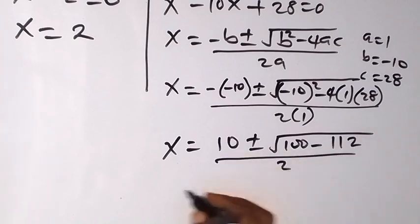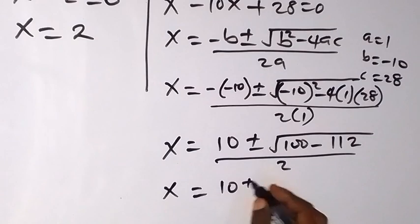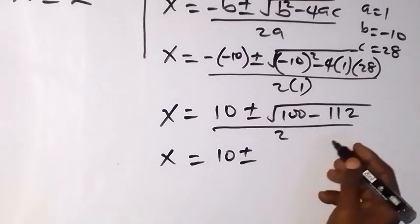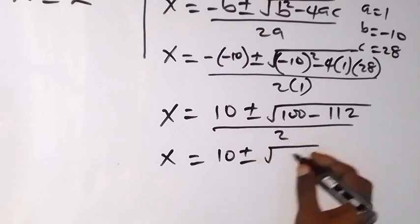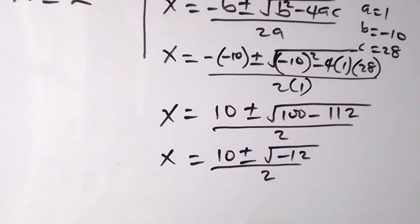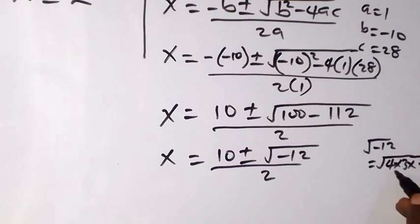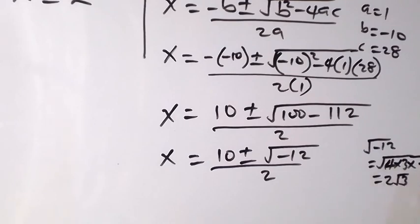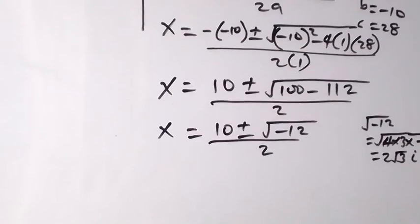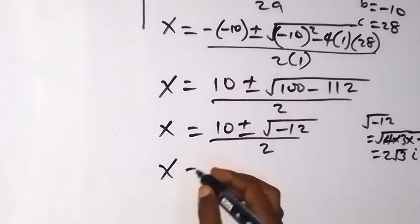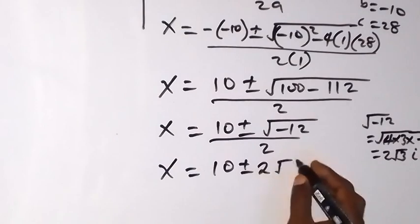So we have x equals 10 plus or minus square root of minus 12, all over 2. We can separate square root of minus 12 as square root of 4 times 3 times minus 1. Square root of 4 is 2, giving us 2 root 3, and square root of minus 1 is i, so we get 2 root 3 i. Replacing this back, x equals 10 plus or minus 2 root 3 i, all over 2.